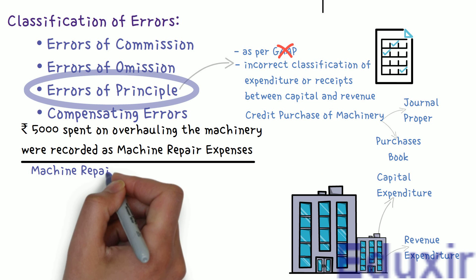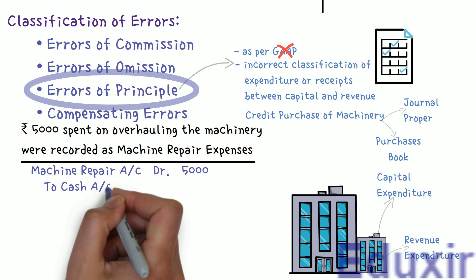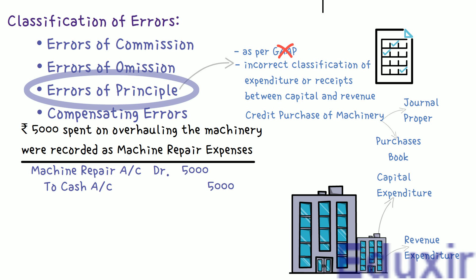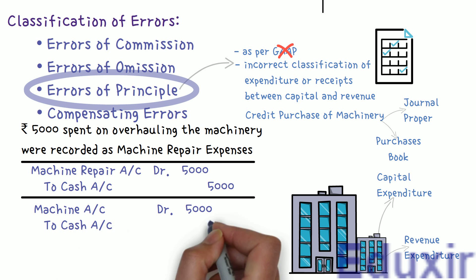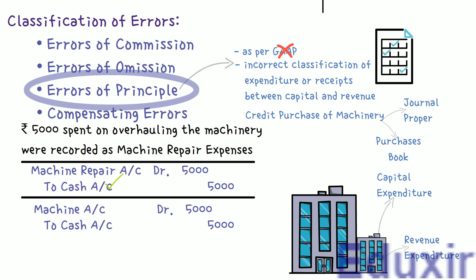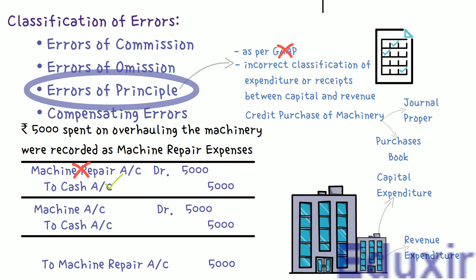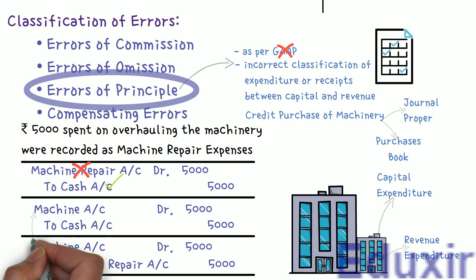The cash account is credited with Rs. 5,000. The correct entry should have been to debit the machine account with Rs. 5,000 and credit the cash account with Rs. 5,000. There is no issue with the credit to the cash account. The incorrect classification is with the account that is debited — the debit to the machine repair account is an error of principle. To rectify it, we make a reverse entry: credit the machine repair account and debit the machine account. So the machine account is debited and the machine repair account is credited in the rectification entry.